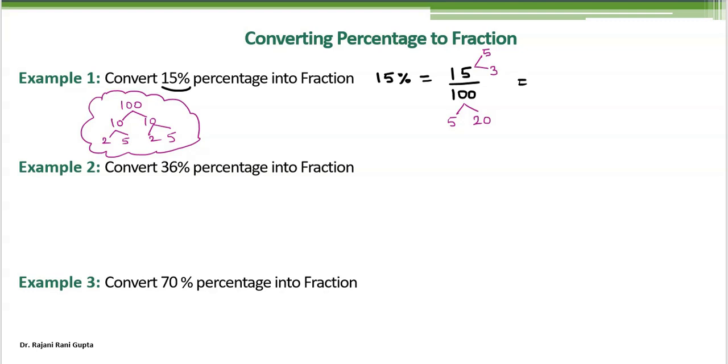So what we get here? If we write, it will be 5 times 3 and then 5 times 20. Now, which number is same in the numerator and denominator? It's 5. So your final answer will be 3 over 20. So 15% is equal to 3 over 20 as a fraction.